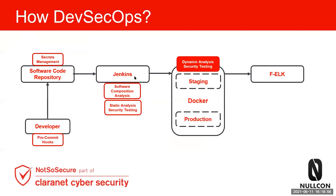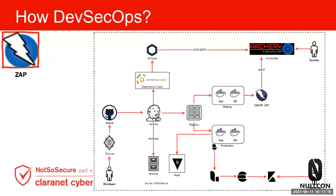The next stage is where the entire code is deployed. After the code is deployed, you can have Dynamic Application Security Testing (DAST) on your staging environment. For this, we use tools like OWASP ZAP, which you can run on your staging environments to identify vulnerabilities. There are several other options such as Burp Suite. The ZAP scanner runs on your staging environment and the results are again pushed to Archery SEC, our central vulnerability management system.